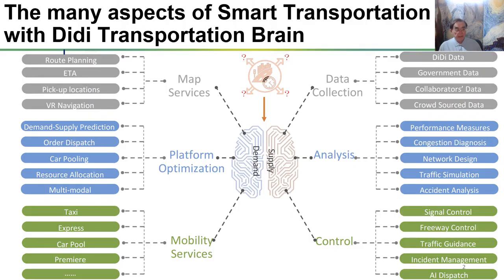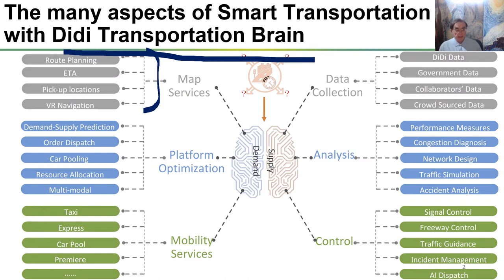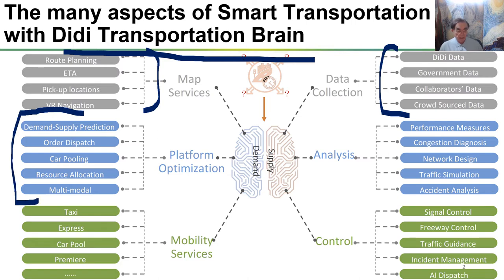Here we have from the DD tutorial, the transportation brain. We have a bunch of map services: pickup locations, estimated time of arrival, navigation, and planning of routes. We have to gather all possible data from DD itself, from the cloud-sourced data from customers. We have to optimize the whole system — demand and supply, the order dispatch, the pooling of the cars.